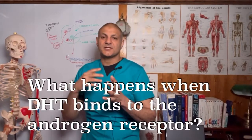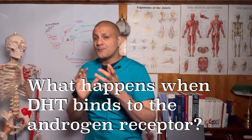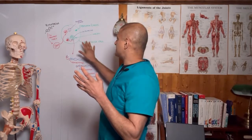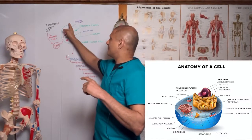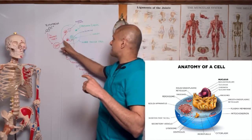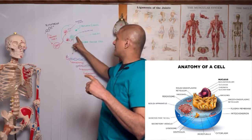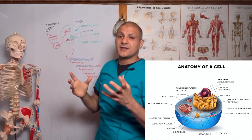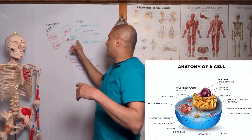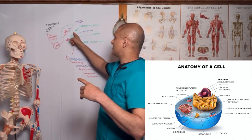Let's look at what happens when DHT binds to the androgen receptor. Imagine this is a hair follicle cell — a quick revision: we have the cell here, this is the cytoplasm, and you have the nucleus, which is where the DNA is stored. Proteins are made in the cytoplasm in ribosomes and are exported out of the cell.